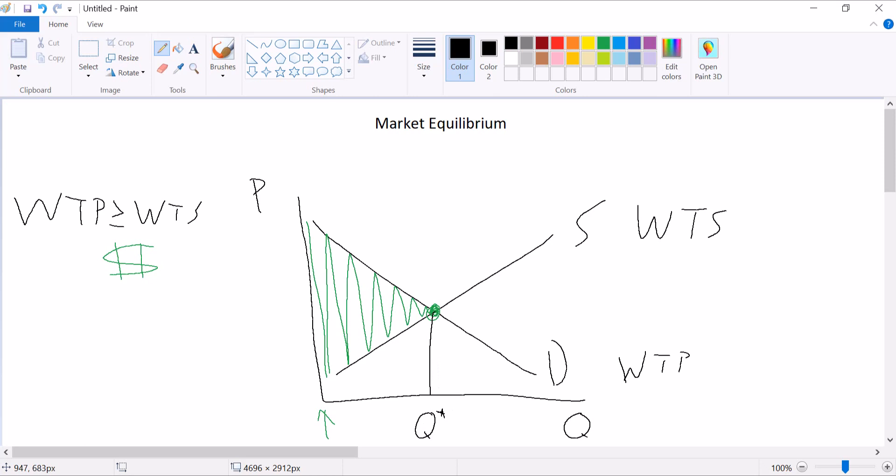Why don't we sell more than Q star? Well, if we tried to sell out here, then consumers' willingness to pay is less than the minimum price sellers are willing to sell for. There's no way to sell to the right of Q star that benefits both buyer and seller. There's no deal that makes them both better off. And so there's no reason for a market to have a higher quantity than this Q star.